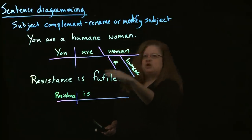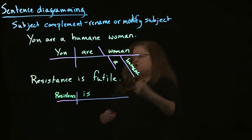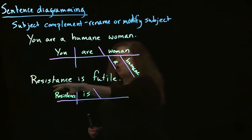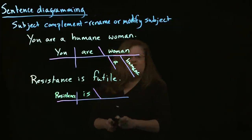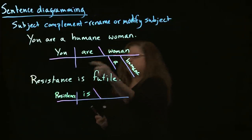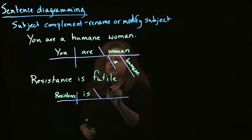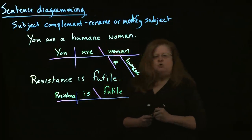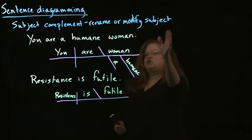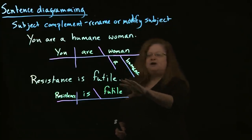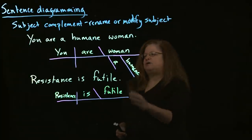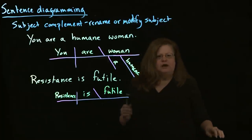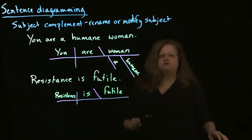Once again, we have a subject complement, so we're going to have our line tilted back toward the subject. Then we have the adjective describing resistance, which is 'futile.' There's your key: if you're renaming the subject or if you're modifying the subject — describing it — you use that line that tilts back toward the subject. That gives you the clue.